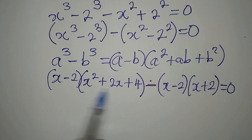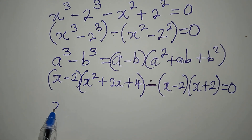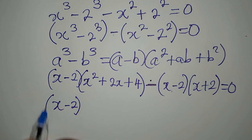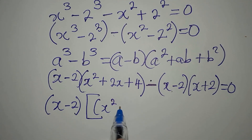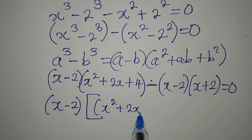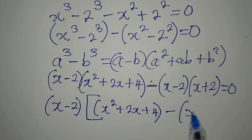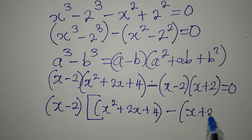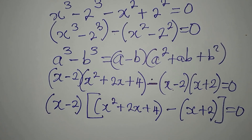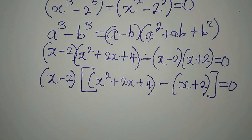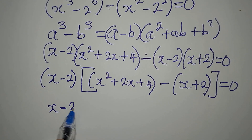If you look here and there, (x minus 2) appears in both terms — it is a common factor. So factoring it out, inside the bracket we have x² plus 2x plus 4, then minus (x plus 2), all equal to zero.